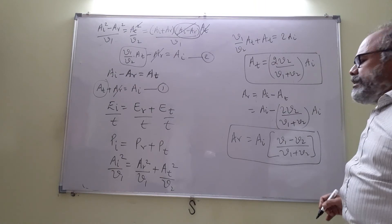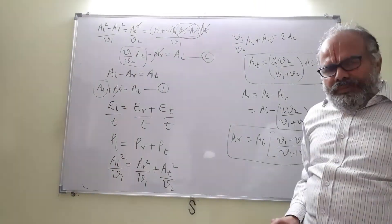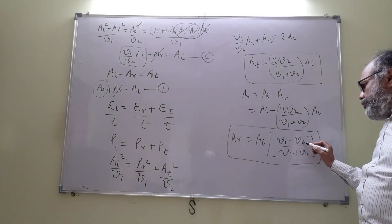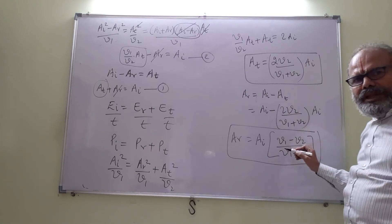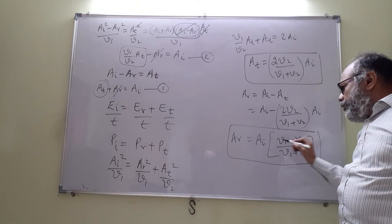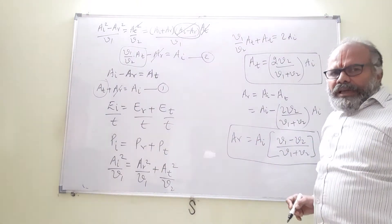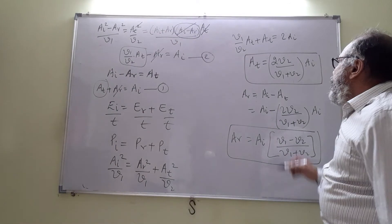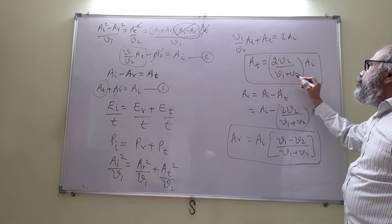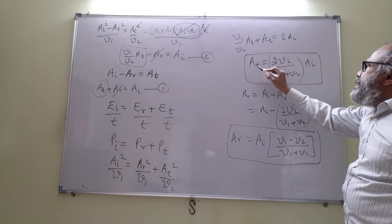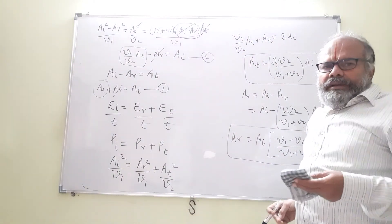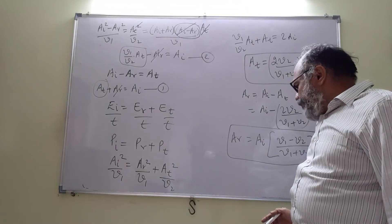We can verify these results. If there is no change in the medium — that is, v2 = v1 — then Ar = (v1 − v2)/(v1 + v2)·Ai = 0, meaning there is no reflected wave. And At = 2v1/(v1 + v1)·Ai = Ai, meaning the wave travels ahead as a travelling wave without any reflection.